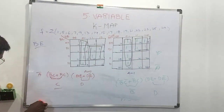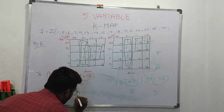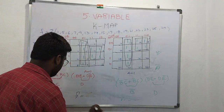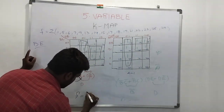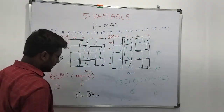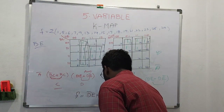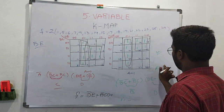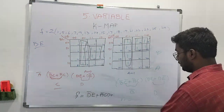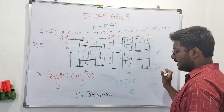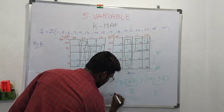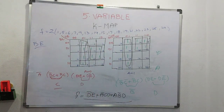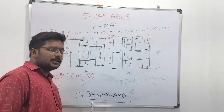The final answer: F of sigma equals D-bar plus E plus A-bar C D. Then A-bar — sorry, not A-bar, just A — gives A B-bar D. So the final answer for the five-variable K-map is: F = D-bar + E + A·B-bar·D.